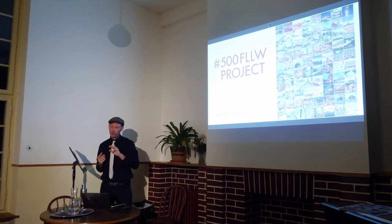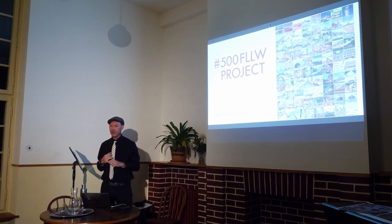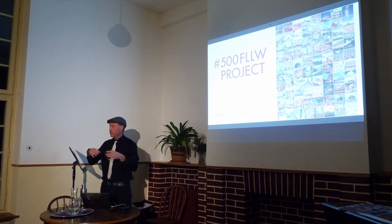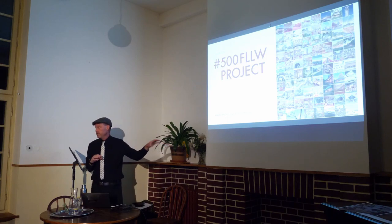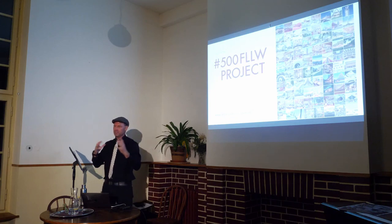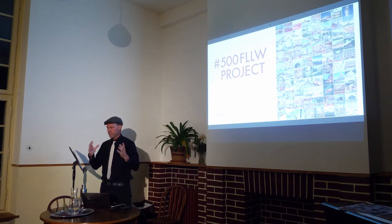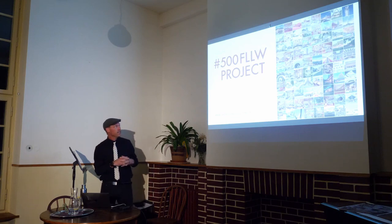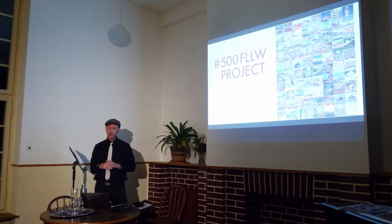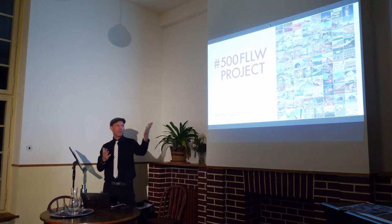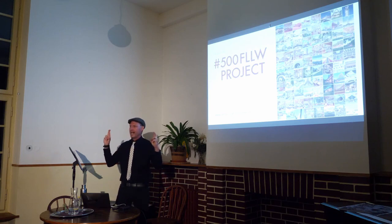Wright designed over a thousand projects; 532 structures were built internationally, and there are now about 430 remaining around the world. The majority of those are in the United States — unfortunately none in Europe here. All the rest are in Japan: he built the Imperial Hotel in Japan, which has now been demolished, but they have a replica of the main lobby area. There's what he calls a girls' school in Japan and a couple of private homes. Currently to date, I have photographed 129 of them, so I only have 300 more to go. When do I want to finish the project? Hopefully before I die.